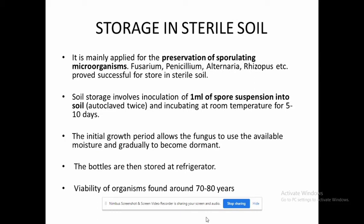For storage in sterile soil, the soil is autoclaved twice, and then 1 ml of spore suspension is added and kept at room temperature for 5 to 10 days. This initial growth period allows the fungus to use the available moisture and gradually become dormant. The bottles are then refrigerated for storage. This method can maintain the organism's viability for 70 to 80 years.